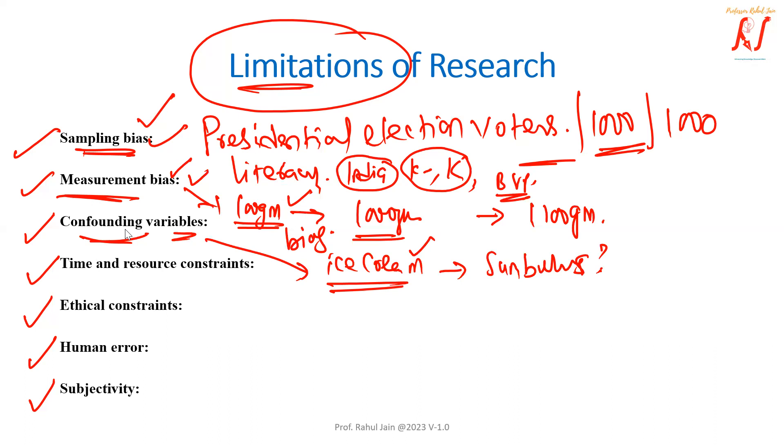So basically the thing is that there is probabilistic associativity of the variables. But that may create some kind of limitations that need not be necessary. If we talk about time and resource constraints, then you know that in each research study, we are bounded with time limitations, as well as resource limitations.